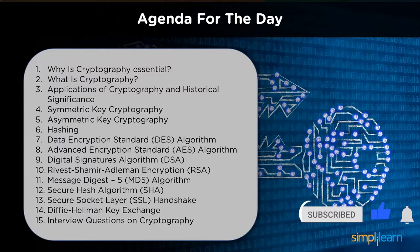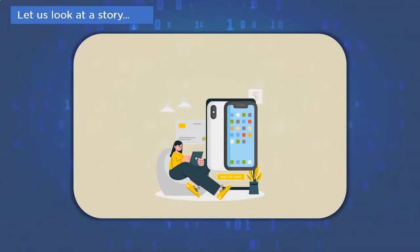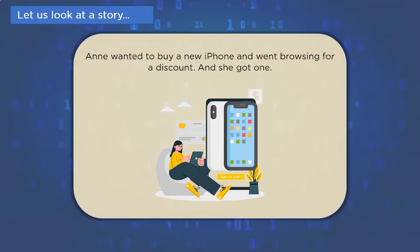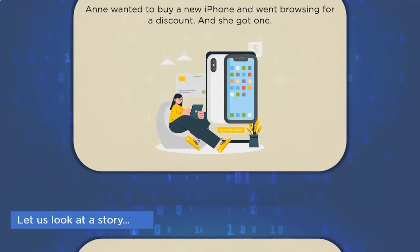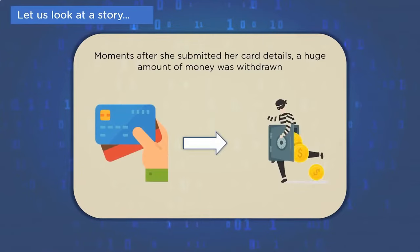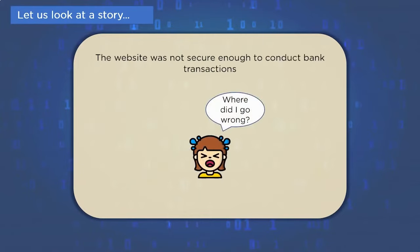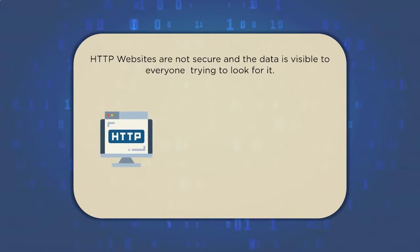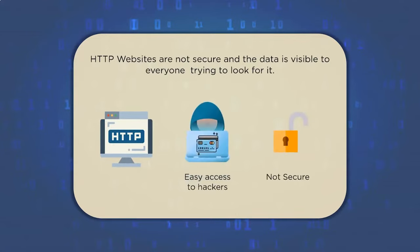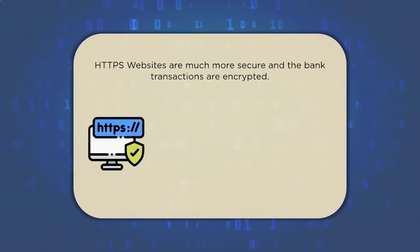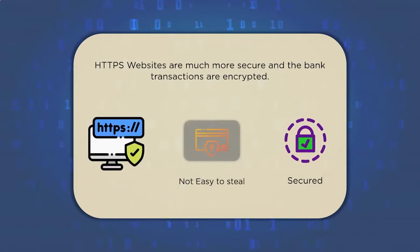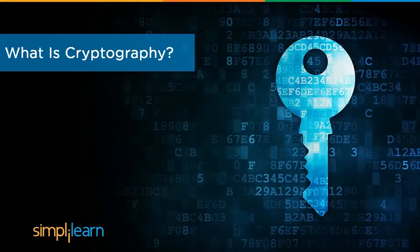Here's a story to help you understand cryptography. Anne wanted to find a discount on the latest iPhone and found a shady website offering 50% off. Once she submitted her payment details, a huge chunk of money was withdrawn from her bank account. Anne realized the website was HTTP instead of HTTPS — her payment information was not encrypted and was visible to anyone, including hackers. Had she used a reputed website with encrypted transactions, this incident could have been avoided.